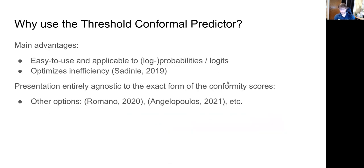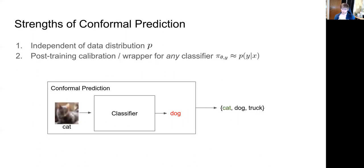The threshold conformal predictor is very easy to use, implement, and differentiate through — an important reason for choosing it. It's applicable to log probabilities and logits alike. For reducing inefficiency, the threshold predictor is known to optimize inefficiency for a fixed model. The presentation is largely agnostic to the predictor choice though — you can use APS, regularized APS, or other conformity scores. At test time you can use these freely; during training we need smooth variants.